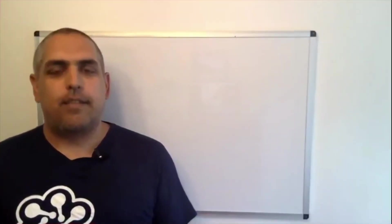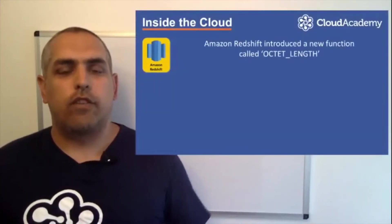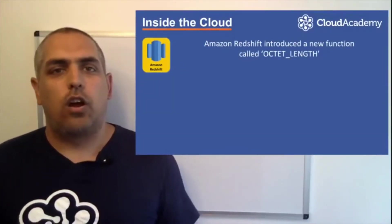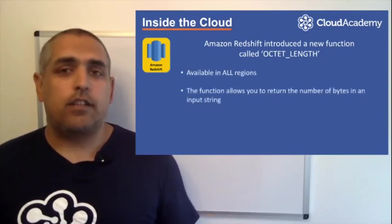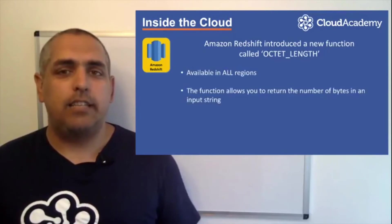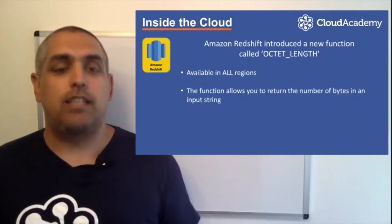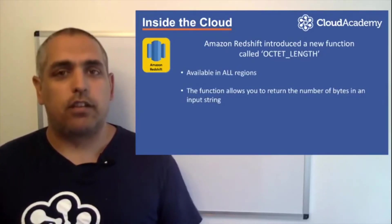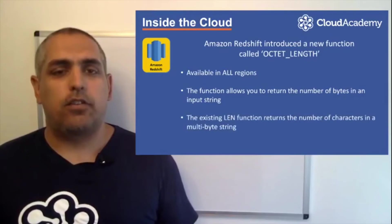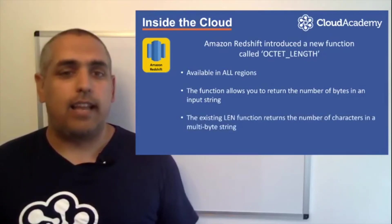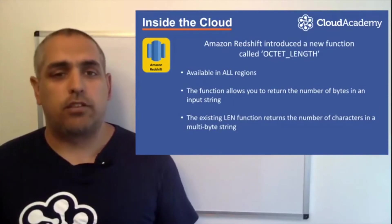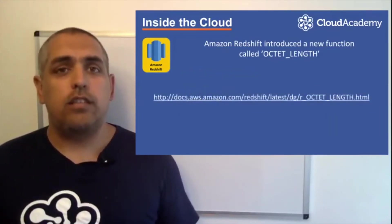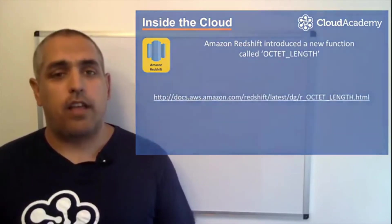Next up is the first of two points relating to Amazon Redshift. On the 23rd of August, Redshift introduced a function called OctetLength, available in all regions. This function simply allows you to return an integer indicating the number of bytes in an input string. An existing similar function already exists called LEN, however, that function returns the number of characters in a multibyte string. More information on this OctetLength function can be found here.